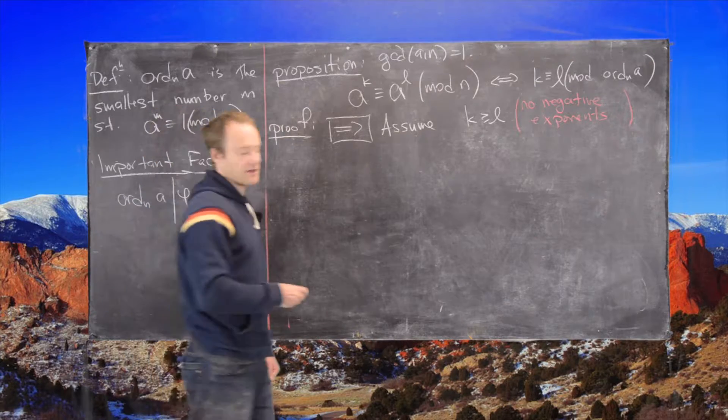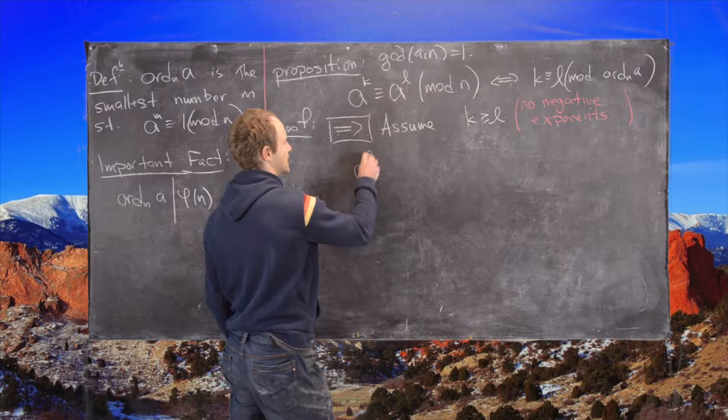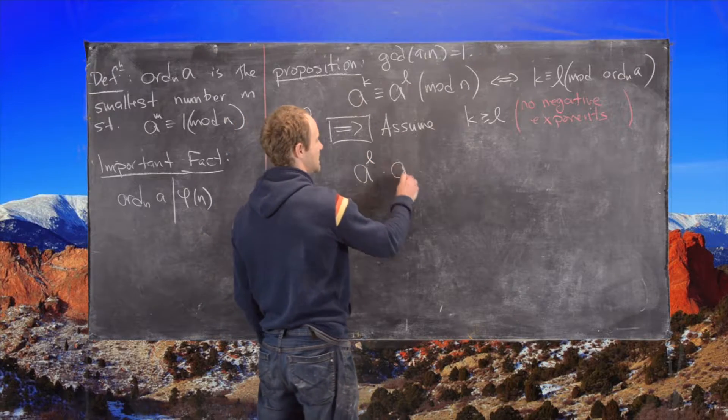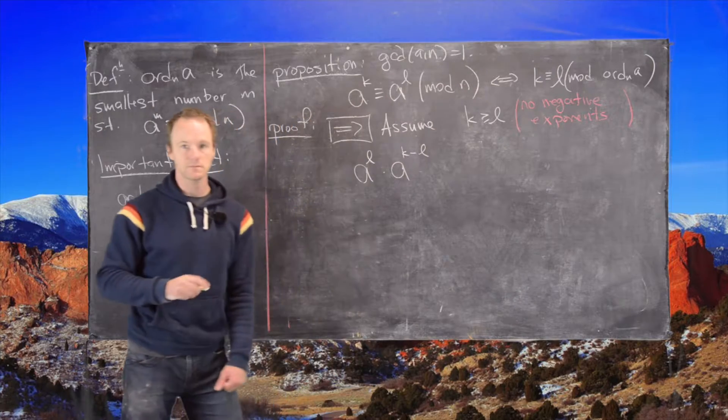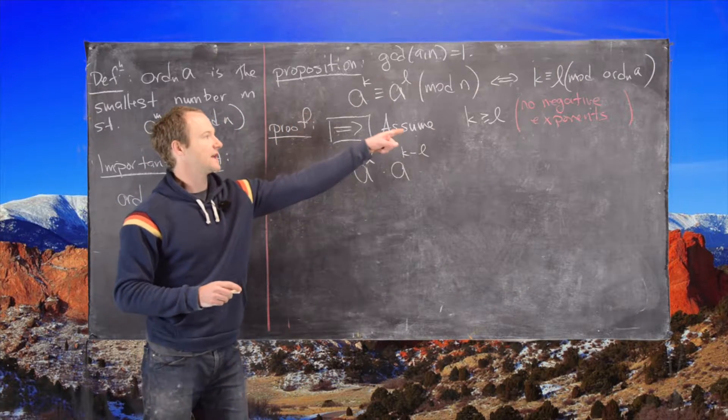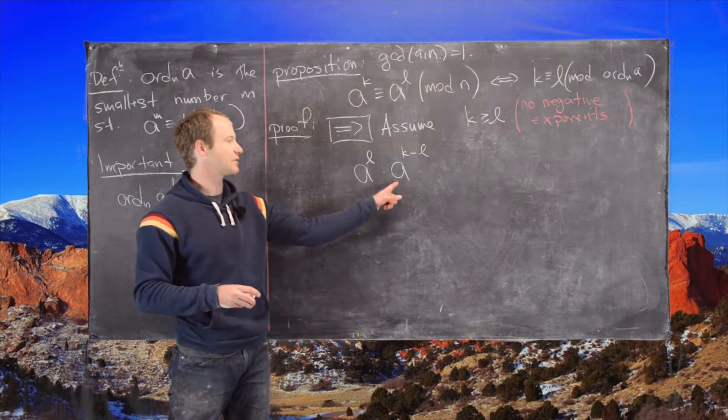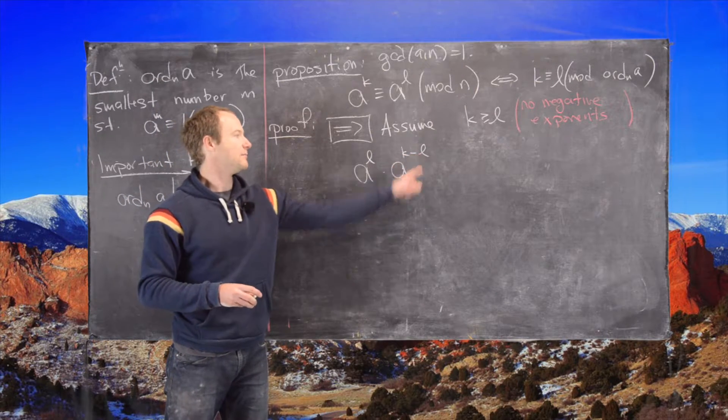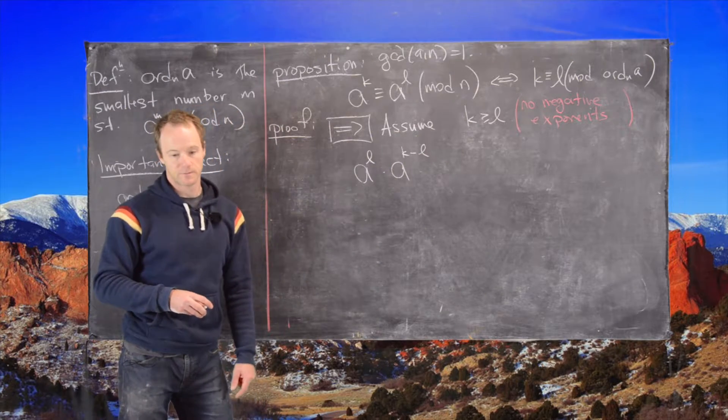Okay, good. So now what I want to look at is this following product. So I'll look at a to the l times a to the k minus l. Okay, great. So again in red I said this will ensure that there are no negative exponents and it did because here we're looking at a to the k minus l and that will be greater than or equal to zero. Good.